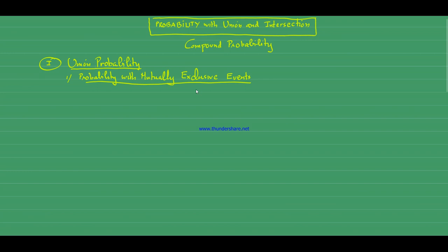The formula to find the probability of mutually exclusive events: the probability of event A union event B equals probability of A plus probability of B. Event A and event B have nothing in common between those two events. You can also write this as P(A ∪ B).